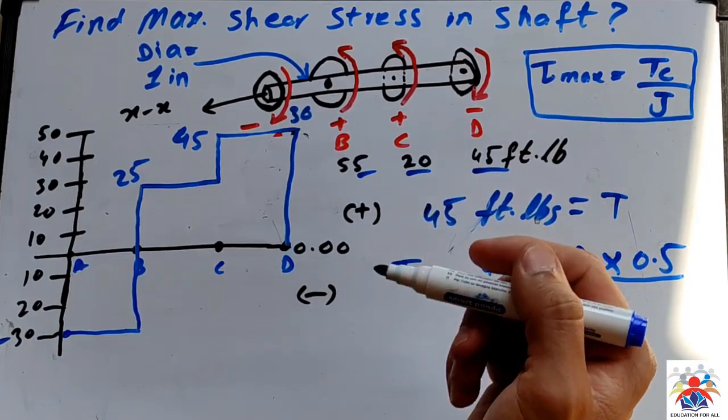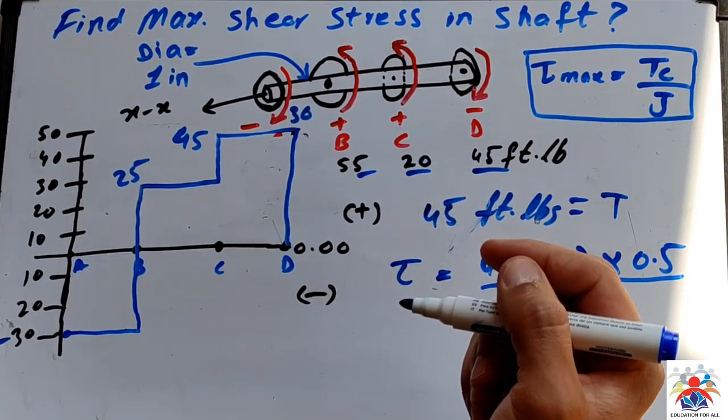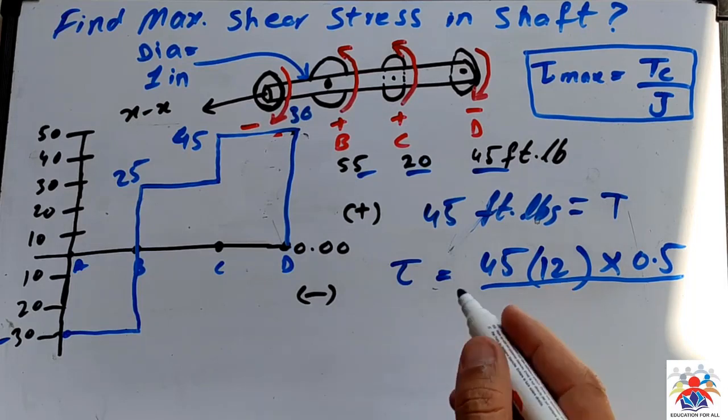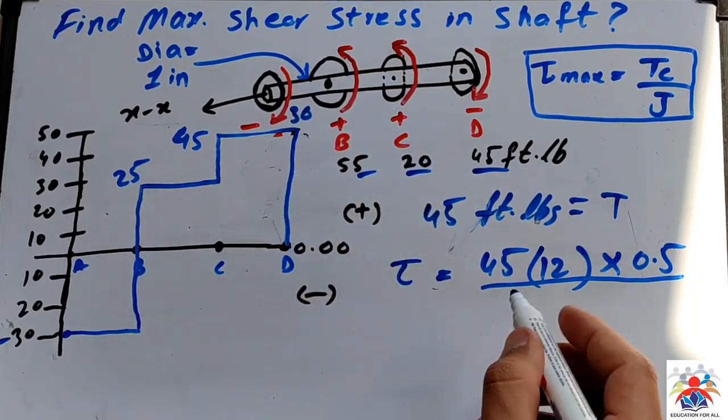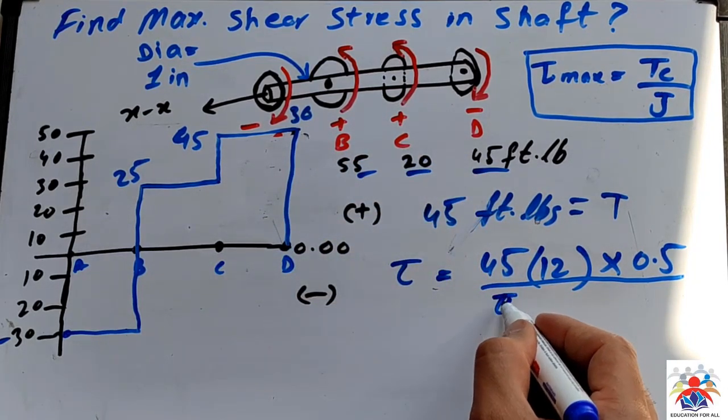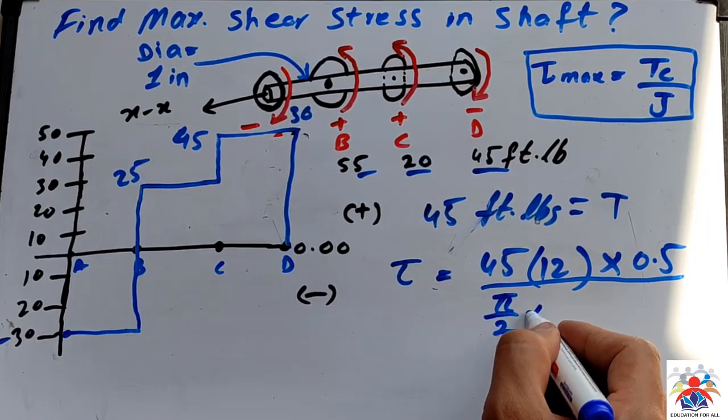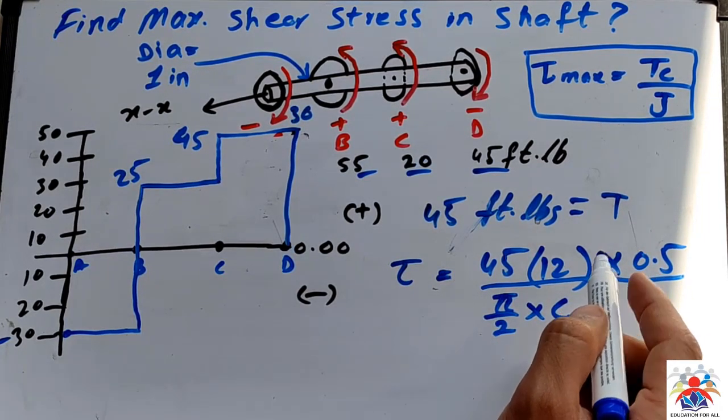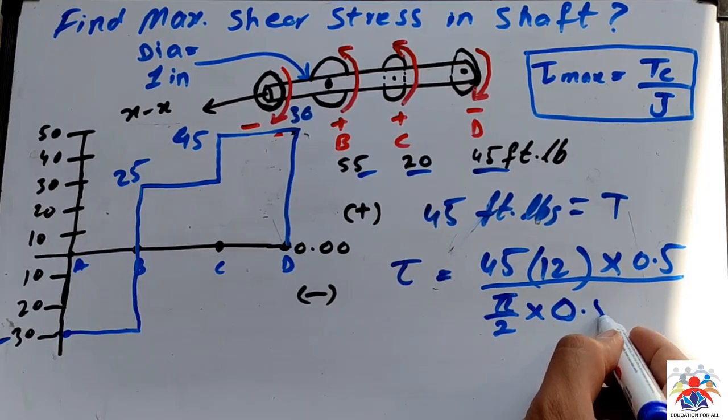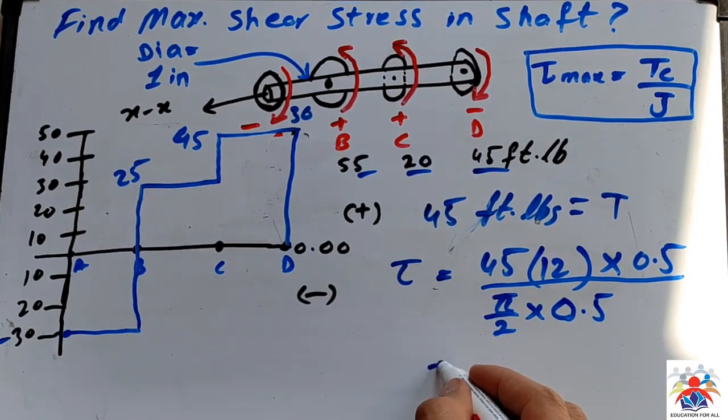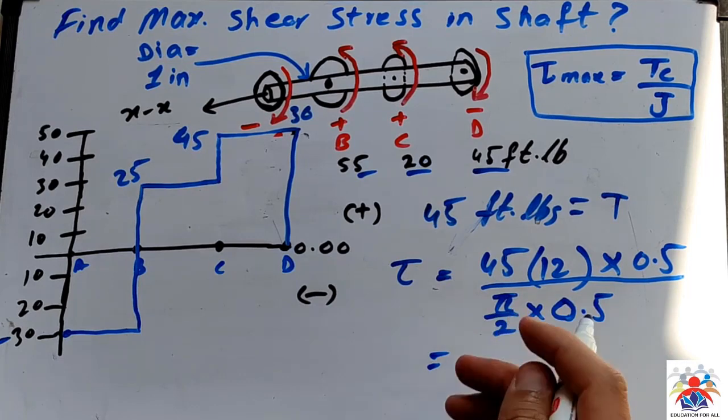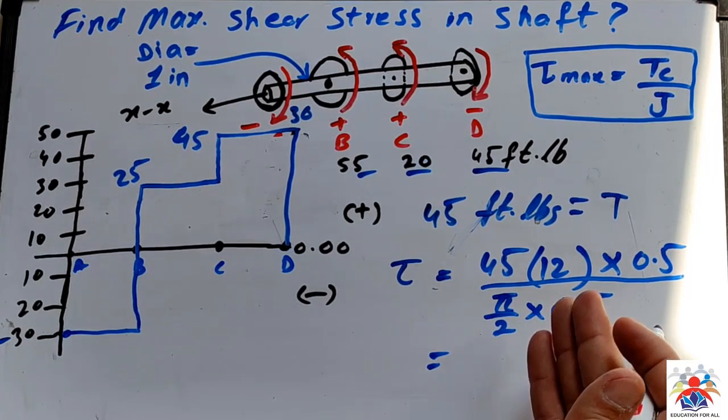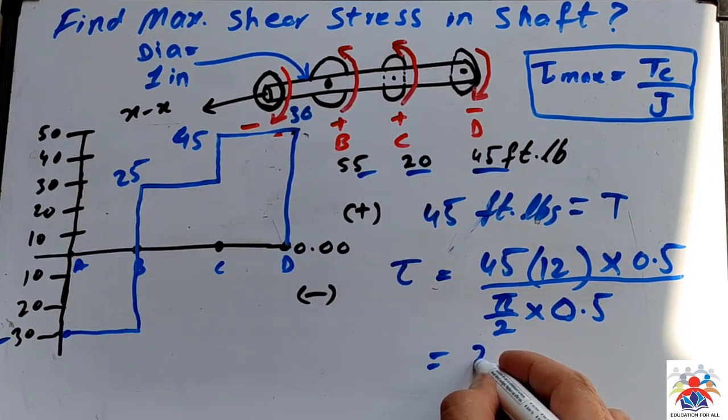Now we have J. What is J? J is basically polar moment of inertia, and for this particular shaft, the value for polar moment is pi over 2 multiplied by radius. Radius, as I have said, we express with c, which is 0.5.